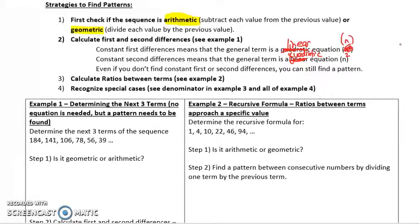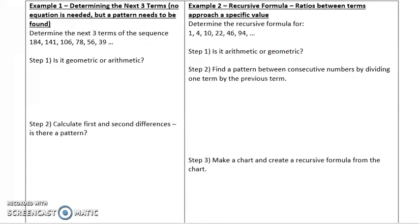Let's look at this first example together. Example one. It simply asks us to determine the next three terms of the sequence: 184, 141, 106, 78, 56, 39. If it says to determine the next three terms, I've put this in bold and brackets here, no equation is needed, but a pattern needs to be found.